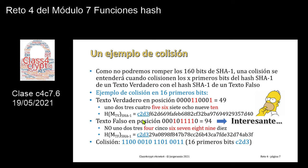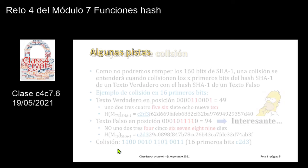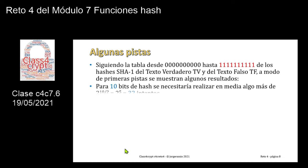Han colisionado los primeros 16 bits de un texto verdadero y de un texto falso. Aquí no colisionan más bits porque el texto verdadero luego sigue por una F, que son cuatro 1s, y el texto falso sigue con un 2, que es 0010. Si por casualidad el texto falso en vez de ser un 2 siguiese con un 8, el 8 es 1000, entonces ya colisionarían los primeros 17 bits. Da igual que sean números pares o impares.